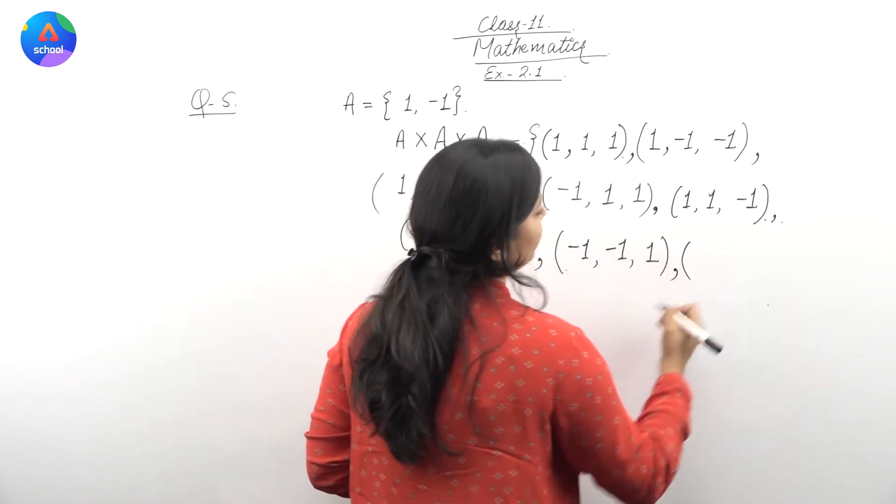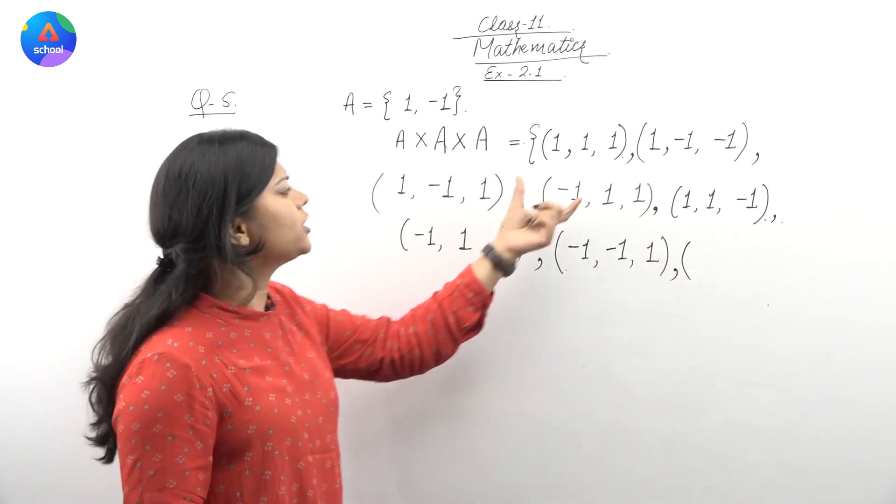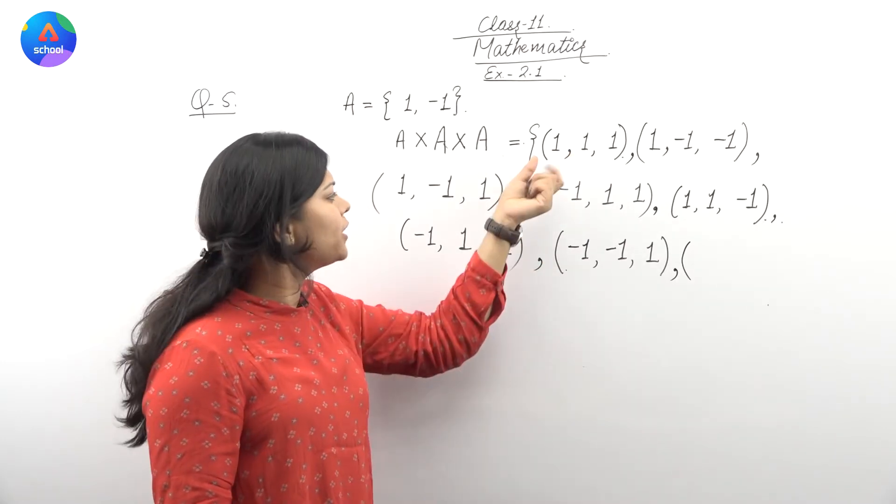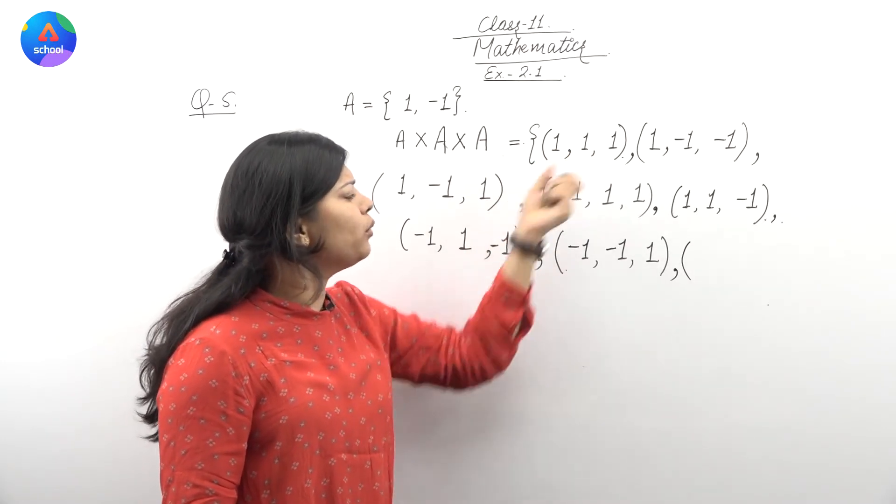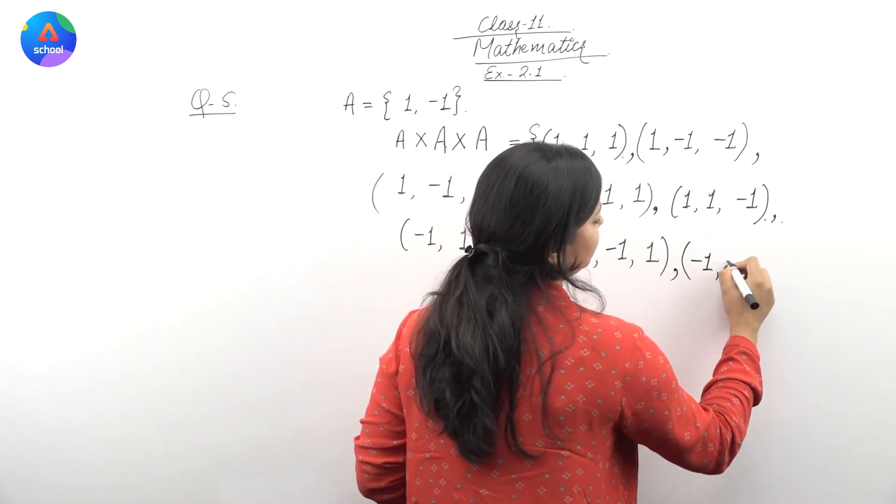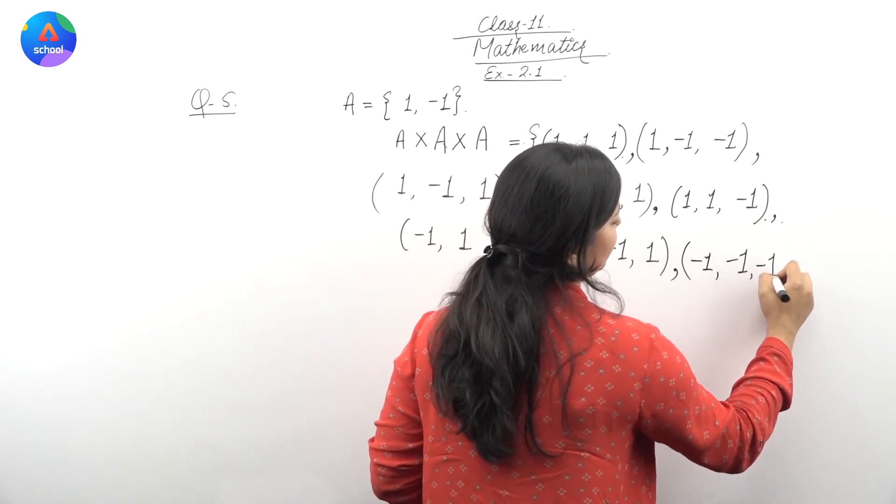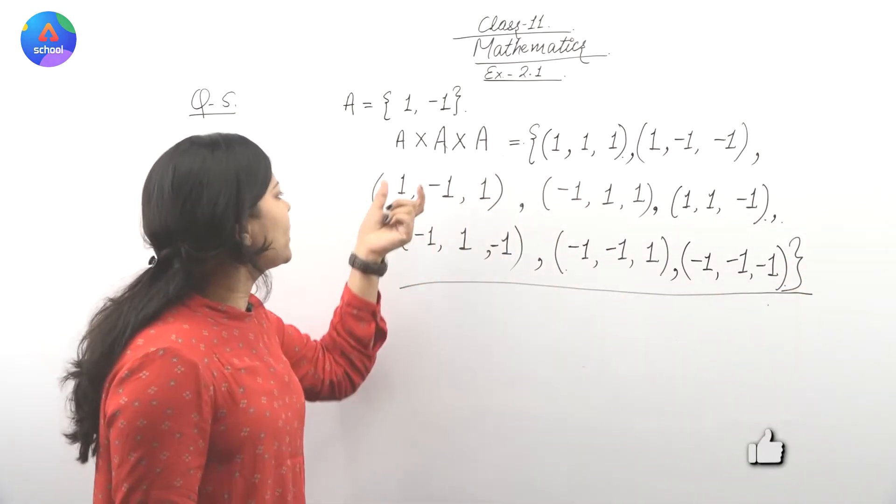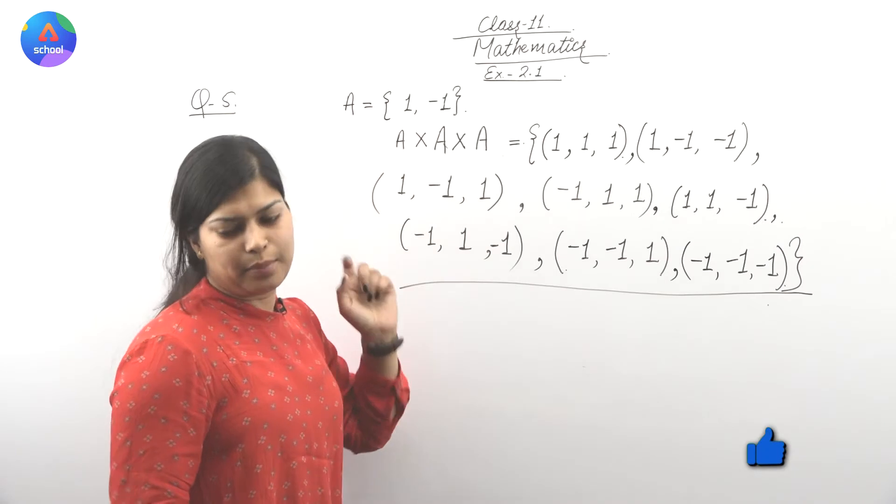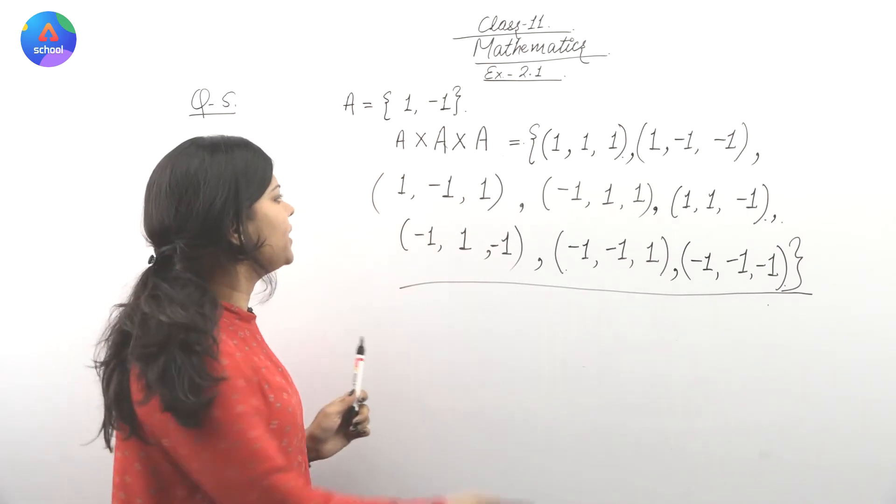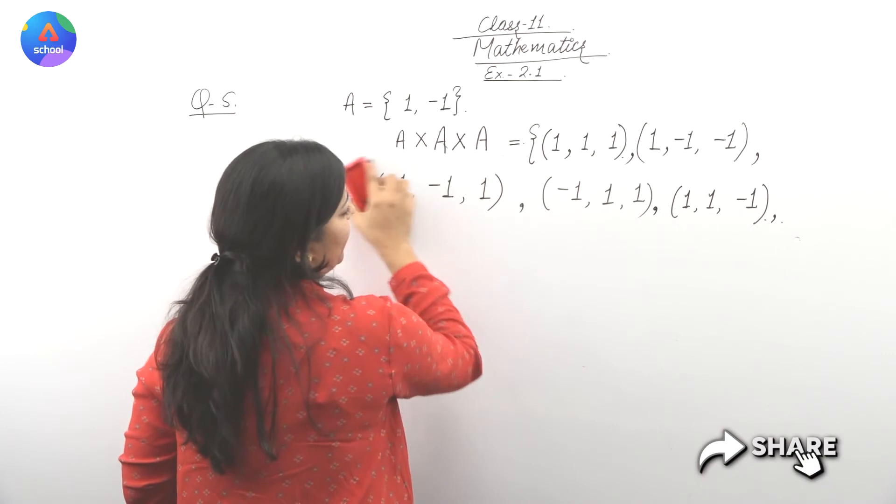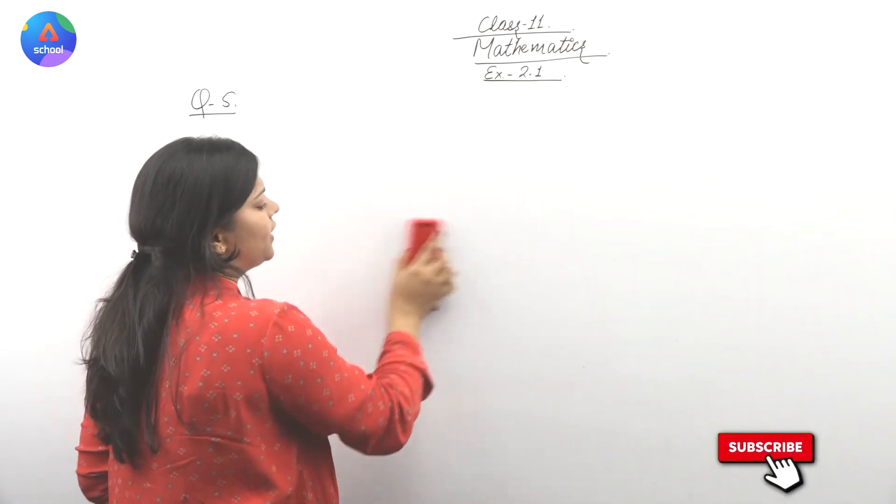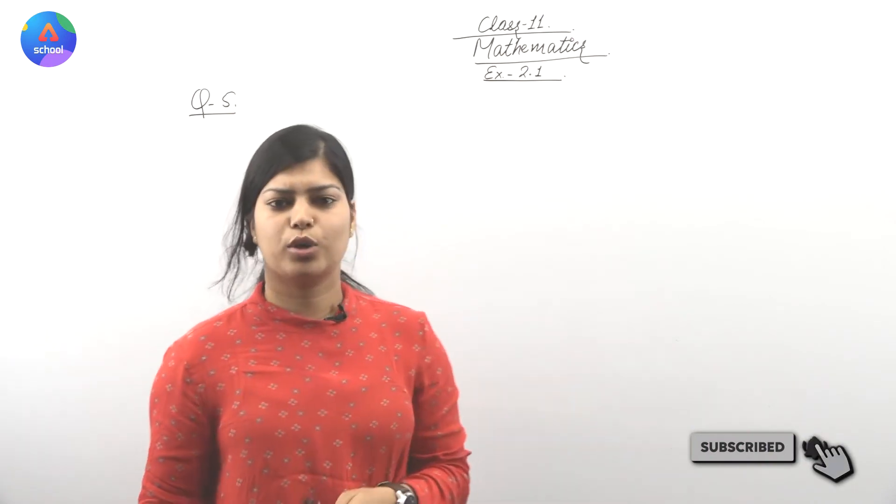Yahaan per, joh first element man liya tha, us mein habare paas tino joh elements mai ne use kiya tha, ake, woh thay one, one, and one. Ab mein use karungi minus one, minus one, and minus one. Yuh ho ga ya humare paura set, joh ki hai A cross A cross A. Is question mein, humane yehi set find out karna tha, joh ki, we have ordered triplets. See how we can write it, this was our question number 5.